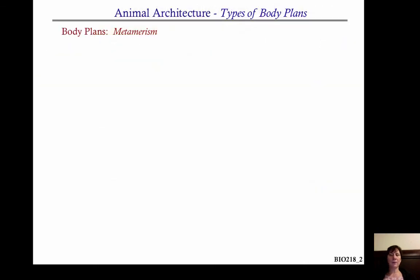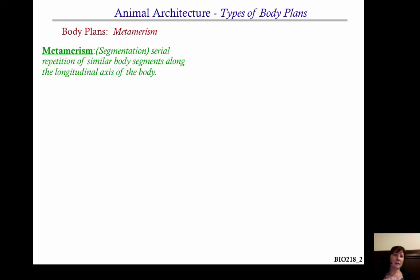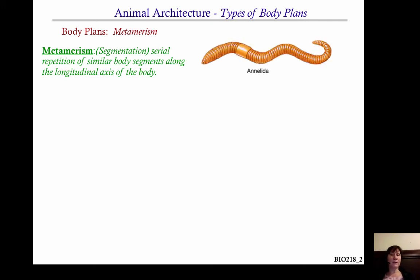A couple other terms to wrap this up: metamerism. This is a type of body plan characteristic that you find several times in the animal world. Metamerism is just a type of segmentation — serial repetition of similar body segments along the longitudinal axis of the body. One example we'll see is in earthworms, where each of these little grooves corresponds to a mesentery separating the body cavity.